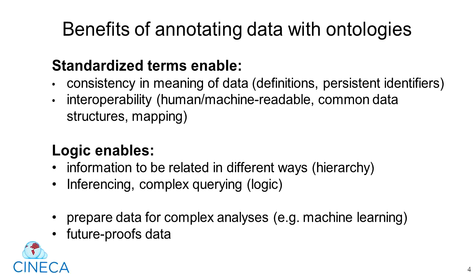The logical relationships between fields and terms enables lots of information types to be linked together, which then enables more complex querying and inferencing, so you can start to ask more complex questions. Taken together, using ontologies better prepares your data for more complex analyses, like machine learning, and also helps to standardize your data for different uses, effectively future-proofing it and making it more reusable.